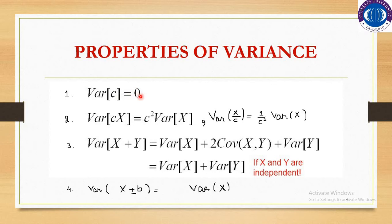Why is this so? Because variance is used to find the variability in a variable. A variable is something which changes, and a constant is something which remains fixed. When you find the measure of dispersion, which measures variability, c is a constant and always remains the same. So what would be the variability in a constant? Obviously, it should be 0. Therefore, the variance of a constant is always 0.